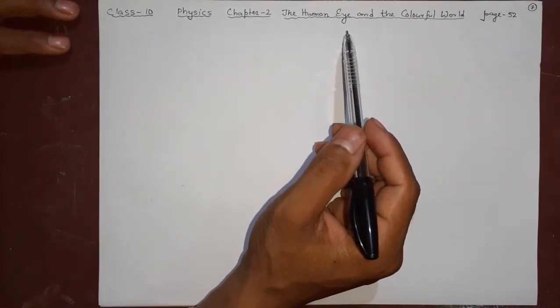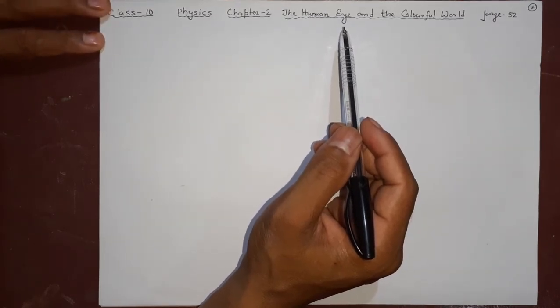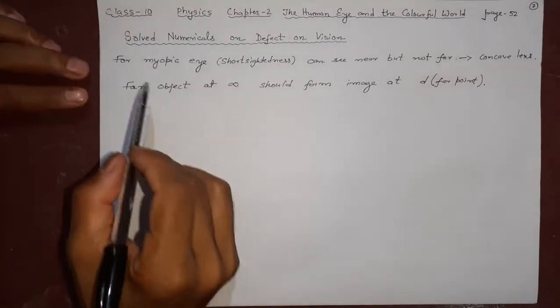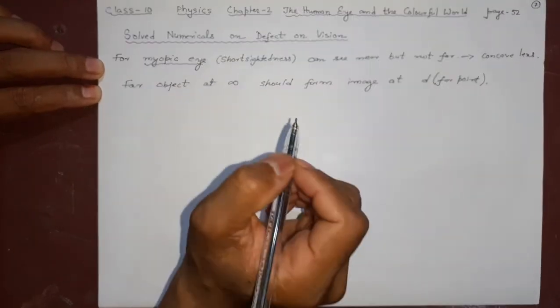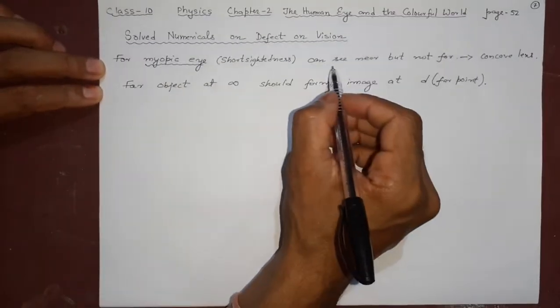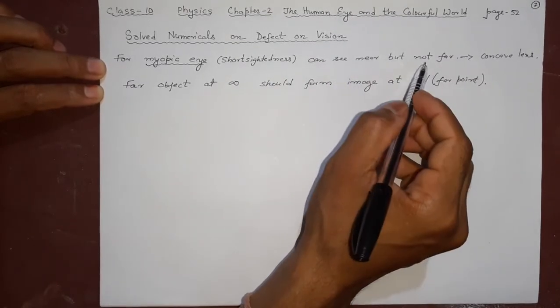Now coming to our present class, we are going to solve numerical problems on defects of vision. For myopic eye first. Myopic means short-sightedness. This type of defect can see near objects but cannot see far objects.